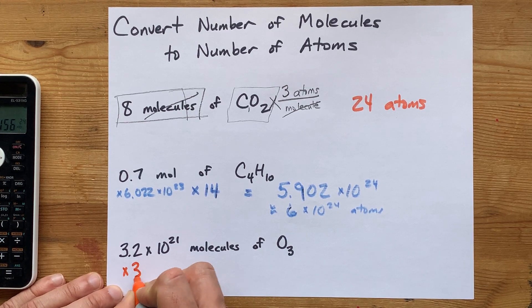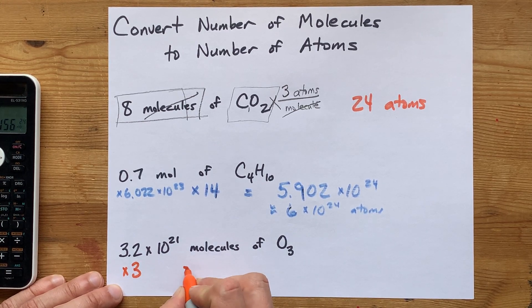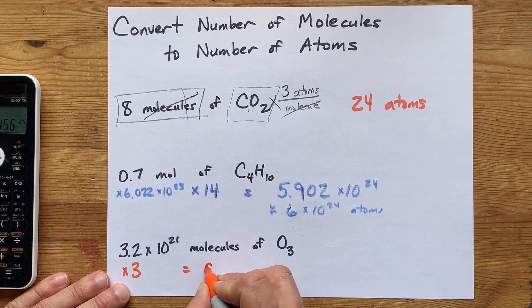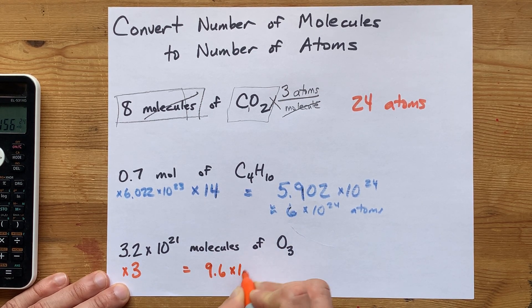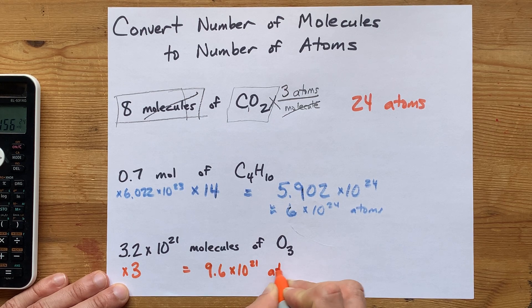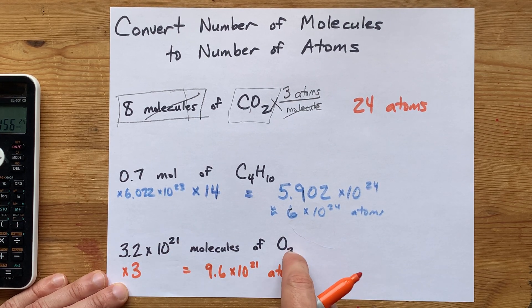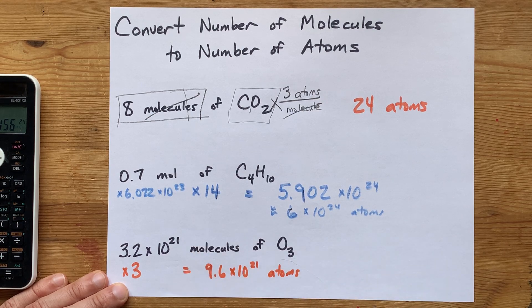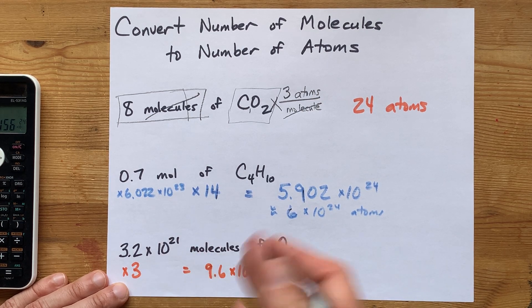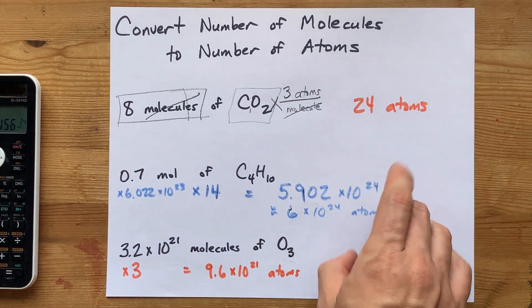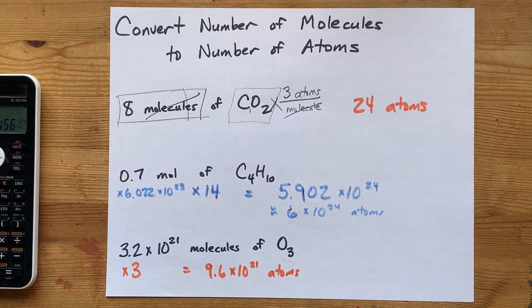So you'll take this number and times it by three. You may not need a calculator to do that, but if you do, go ahead. Free country. It's 9.6 times 10 to the power of 21 atoms. Because again, you have this many molecules, and then there's three oxygens in each of those packages. So just triple the number and you get the number of atoms. Beautiful. Hope that made sense. Thanks for being with me, and best of luck.